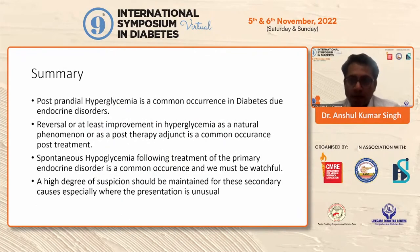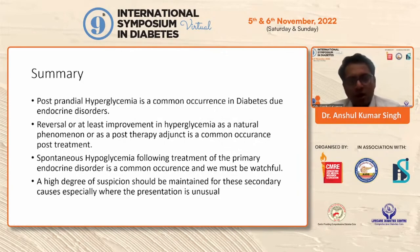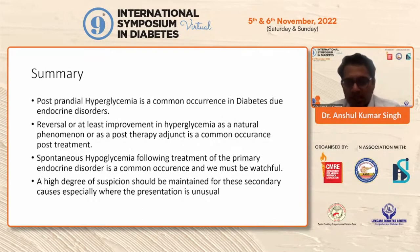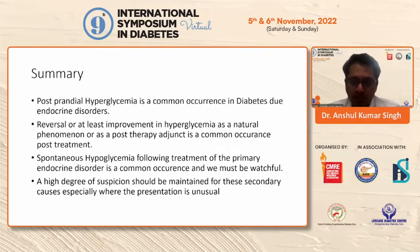To summarize: post-prandial hyperglycemia is a common occurrence in diabetes due to endocrine causes. Reversal or at least improvement is usually seen as a natural phenomenon or as a post-therapy adjunct — every time these tumors are treated, hyperglycemia at least improves if not completely cured. Spontaneous hypoglycemia, as mentioned, may sometimes be seen especially with pituitary tumors where hypopituitarism is common. A high degree of suspicion should be maintained for these secondary causes, especially where the presentation is very unusual. Thank you.